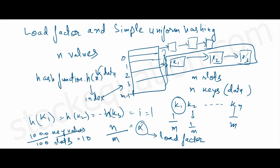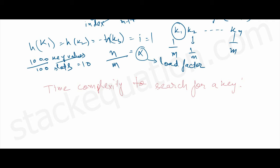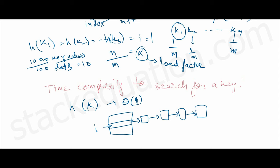The time complexity to search for a key involves two steps. First, we need to find the index of the key using the hash function, which takes O(1) time. Then, once we find the index, we search through the linked list attached to that index, whose average length is alpha — the number of key values divided by the number of slots. So searching through the list takes O(alpha) time.